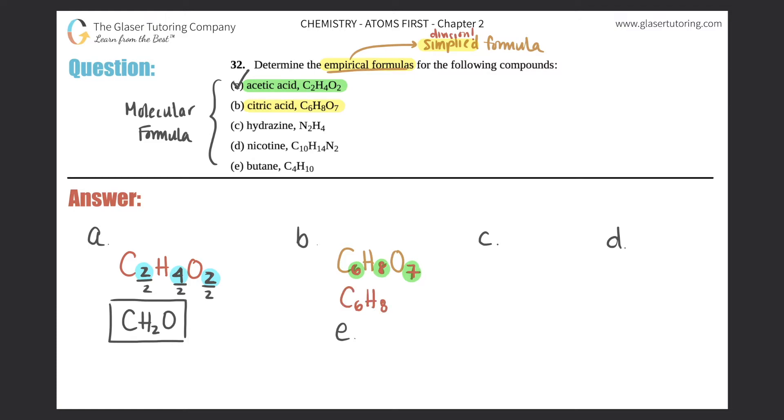No, there's no common number between six, eight, and seven. When that's the case, the molecular formula is the same thing as the empirical formula. So this would just be C6H8O7. Next, we got hydrazine, N2H4.